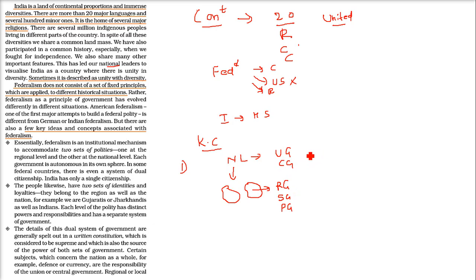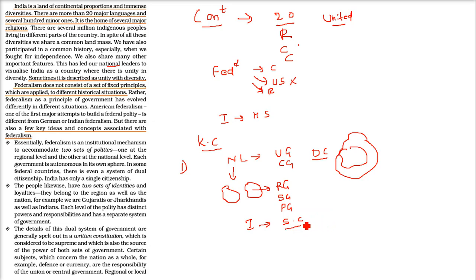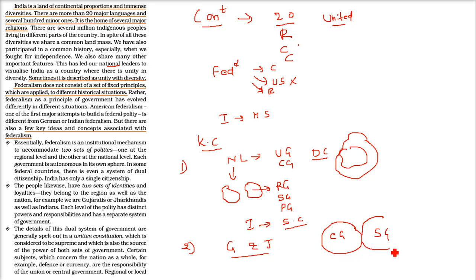In certain countries, people have dual citizenship — they are citizens of their province and also citizens of that country. But India has only single citizenship. We all are Indian — you may be Gujarati, I may be Uttarakhandi, but we are both Indians. The second important thing is that each level of government has distinct powers and responsibilities — they have a very clearly defined area of powers and responsibilities.